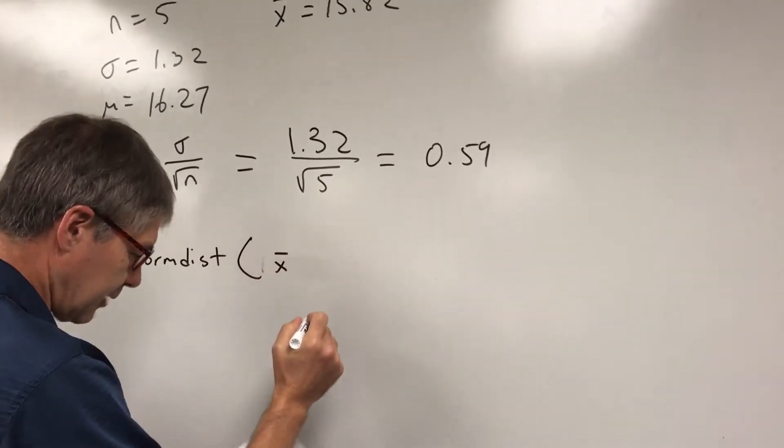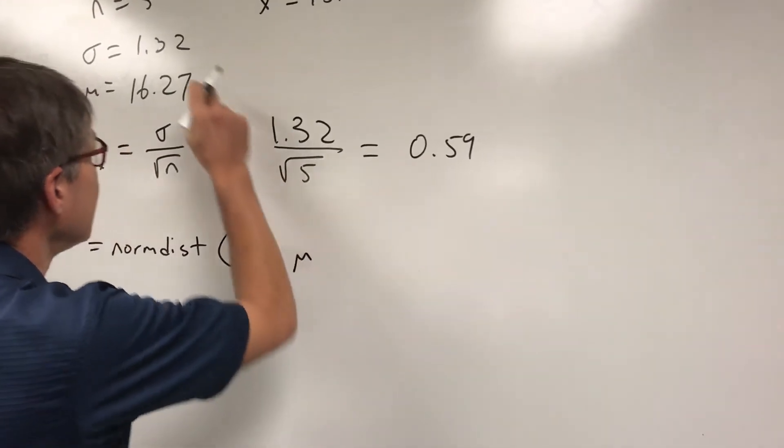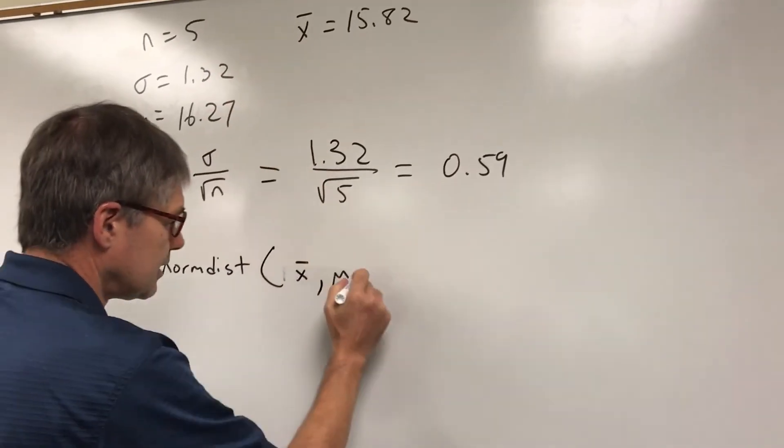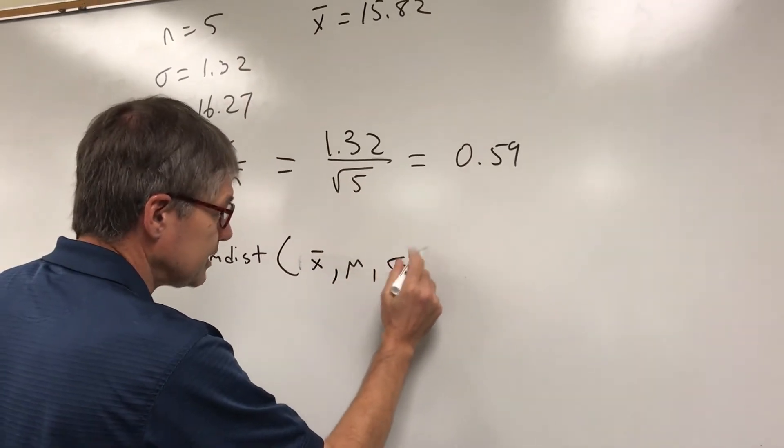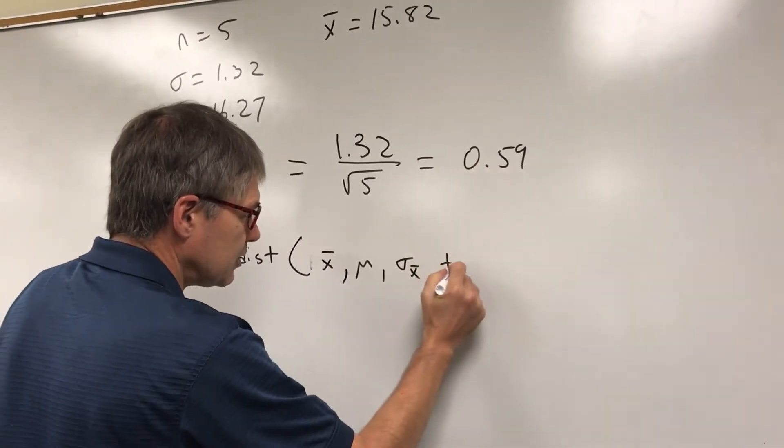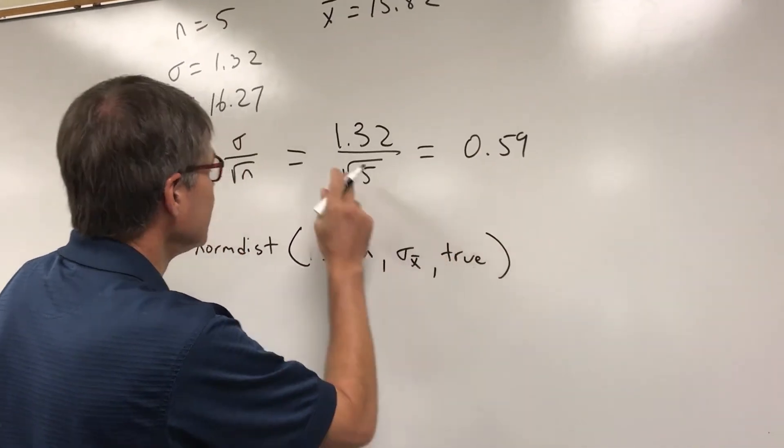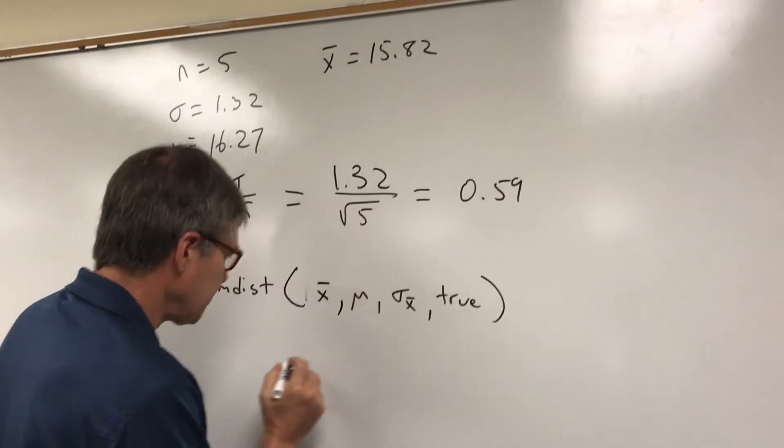x bar. Then I want the historic average. Then I want the standard deviation of the means. I want true. Because I want 15.82 or less. Plug that in.